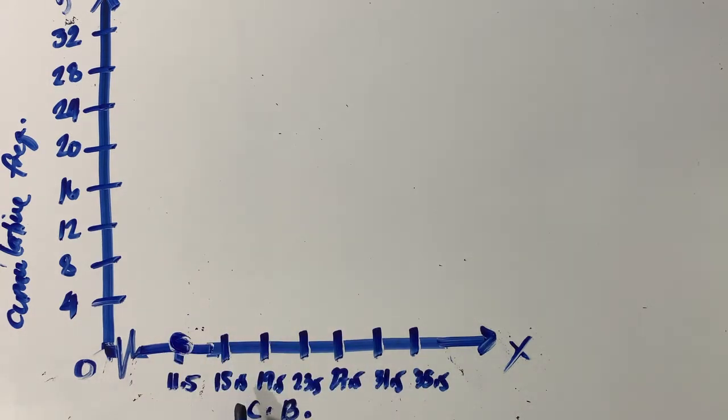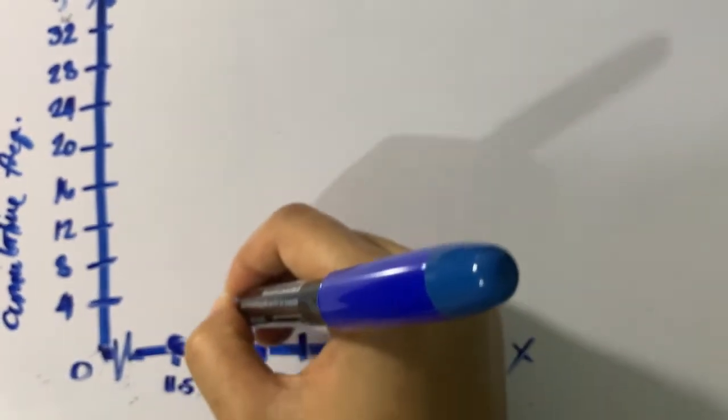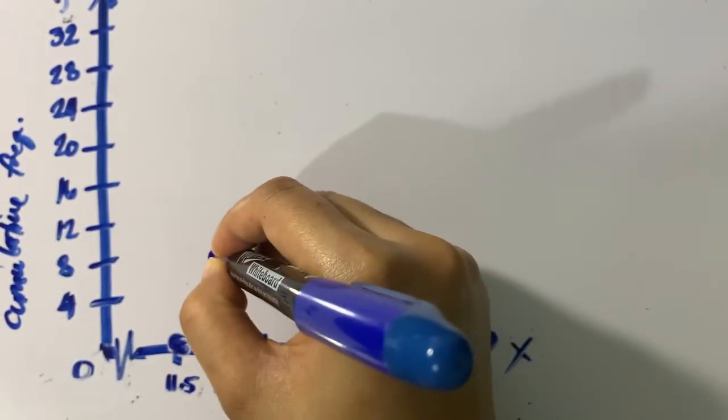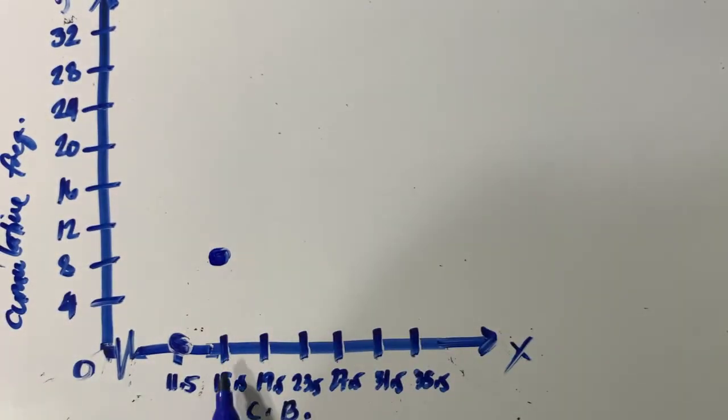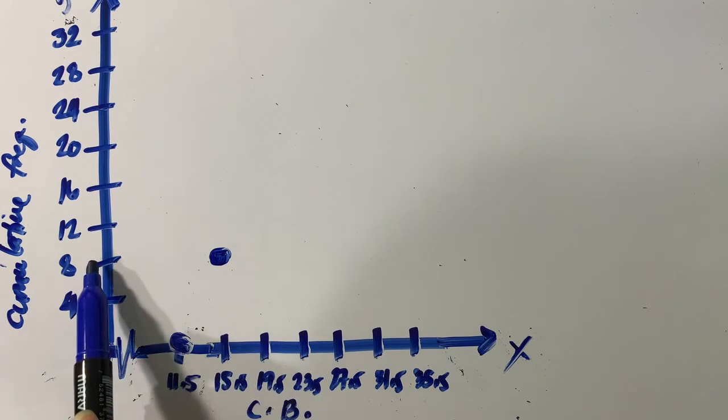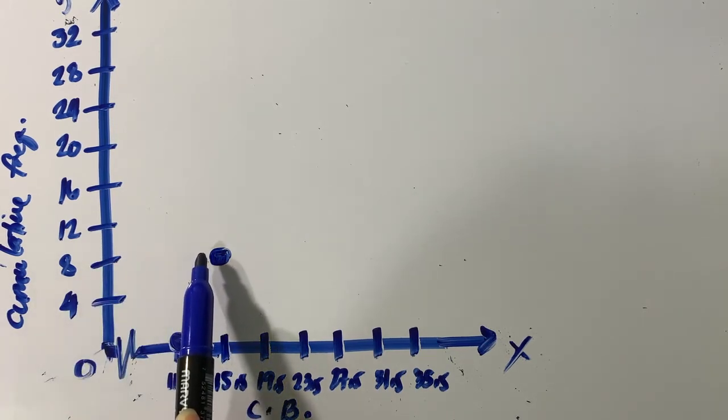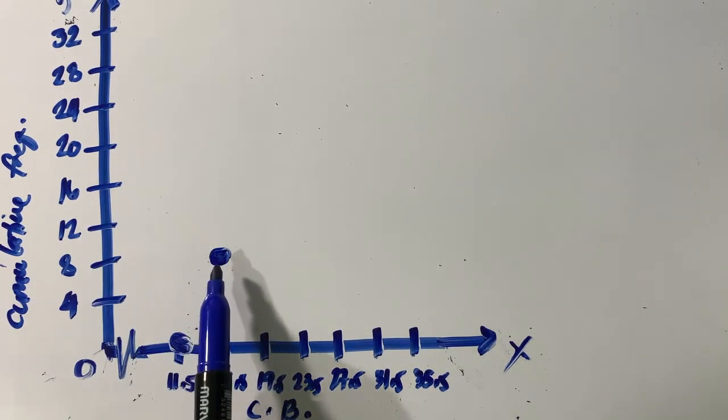With the upper class boundary of 15.5, the corresponding cumulative frequency is 8. So we are going to come up with this point. This is 15.5 along the x-axis and along the y-axis that should correspond to the cumulative frequency which is 8. Just come up with an approximation or estimation of that.